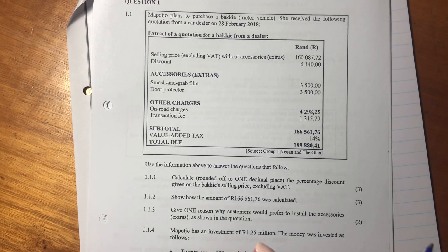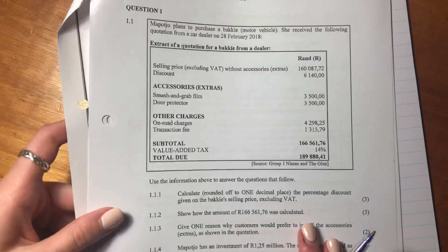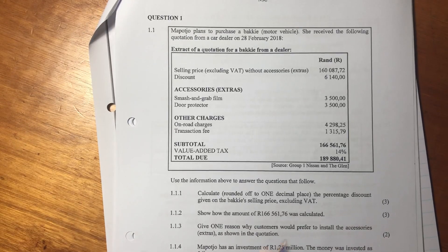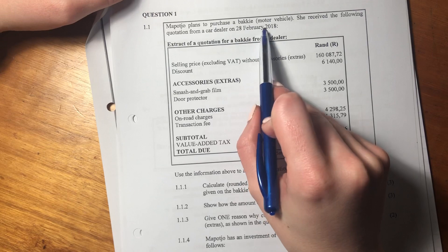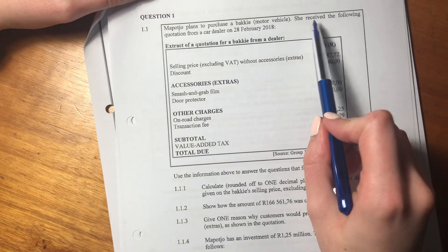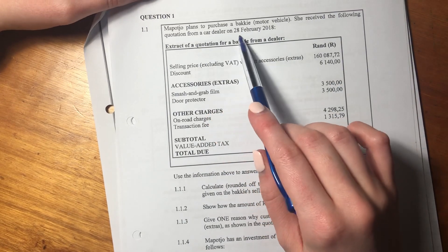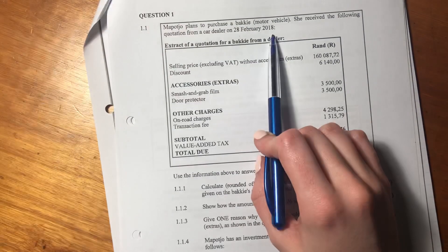Hey guys, so we are moving on to paper two, and let's look at question one. So it says Mapocho plans to purchase a Bucky, a motor vehicle. She received the following quotation from a car dealer on 28 February 2018.